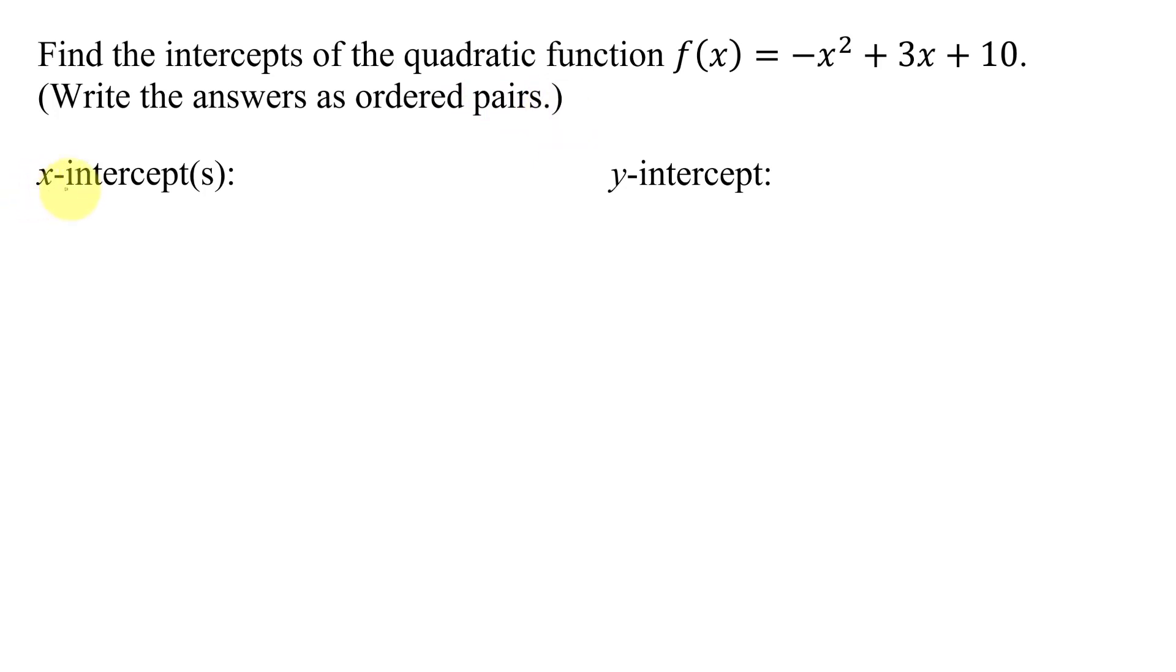How do we find the x-intercepts of any function? We do it by setting y equal to 0, or in this case, that means by setting f(x) equal to 0. So I'm going to put a 0 here. So I get 0 equals, then my equation, negative x squared plus 3x plus 10.